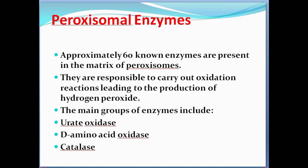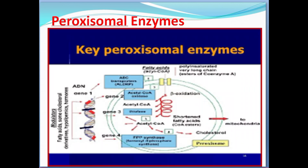Peroxisomal enzymes: Peroxisomes contain about 60 enzymes present in their matrix. These enzymes are responsible for carrying out oxidation reactions, leading to the formation of hydrogen peroxide (H₂O₂). The main group of peroxisomal enzymes includes urate oxidase, D-amino acid oxidase, and catalase. These three are the major peroxisomal enzymes and are all involved in the catabolic activity of the cell.